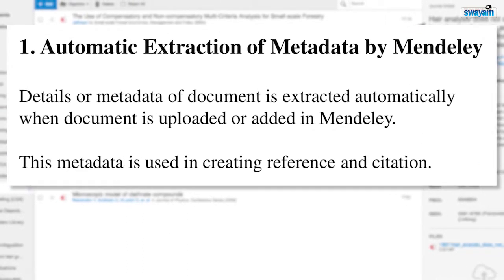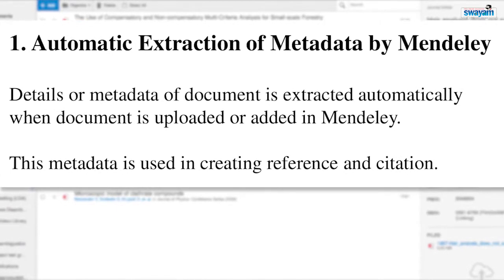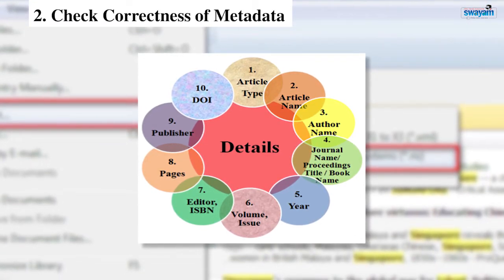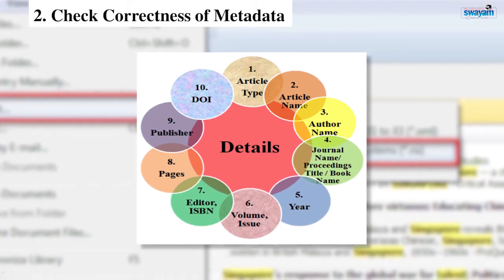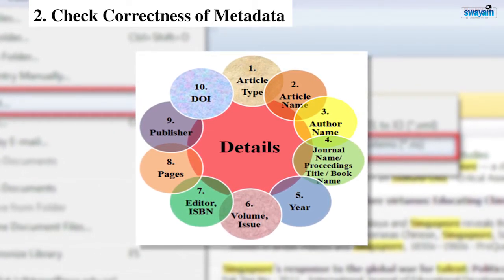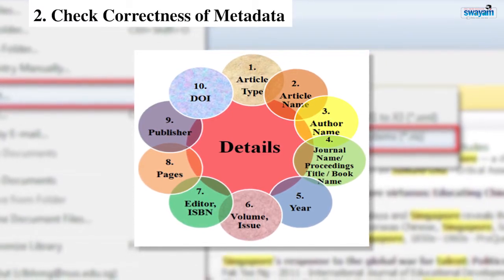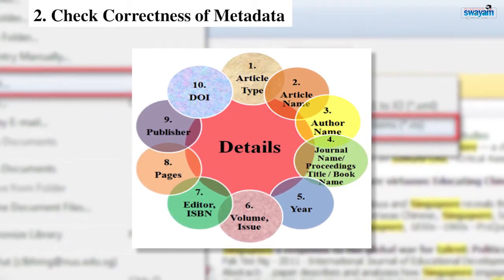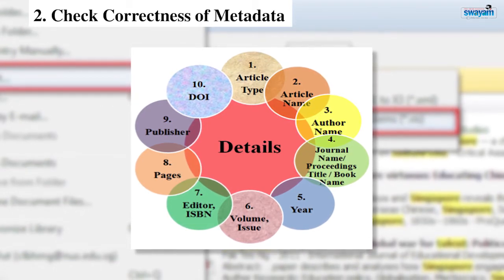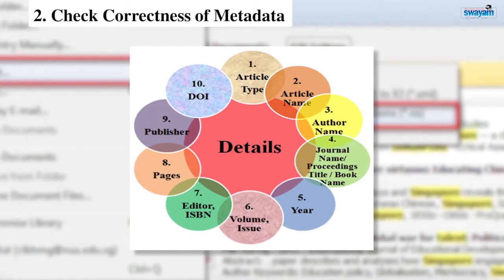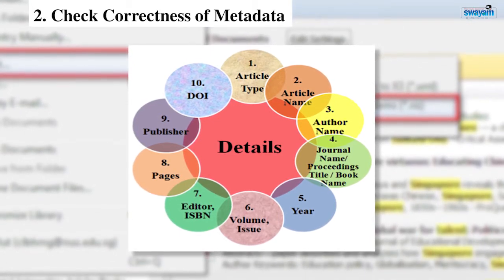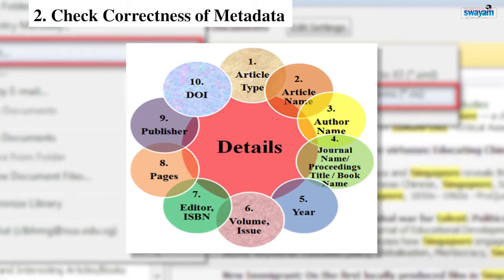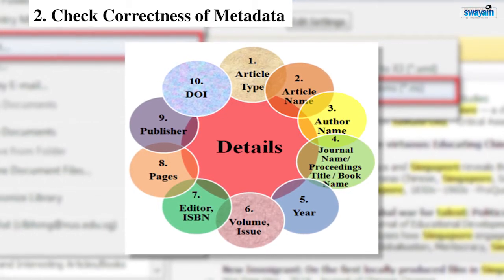The metadata that is fetched automatically by Mendeley must be checked. The second point is to ensure the correctness of metadata. The different entities that should be checked are: article type, name of the article, author name, the type of the publication — that is whether it has been published in a journal, a conference proceeding, book, etc. You must also check the correctness of the year of publication, and the volume and issue of publication.